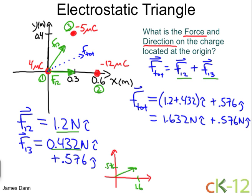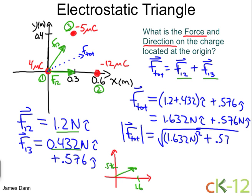Now, to find the magnitude, we just use Pythagorean Theorem. Magnitude is just the length of the vector. So that's just the square root of 1.632 Newtons squared plus 0.576 Newtons squared, all under the square root. And we get an answer of 1.7 Newtons.